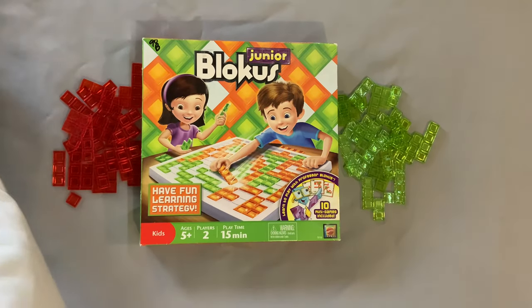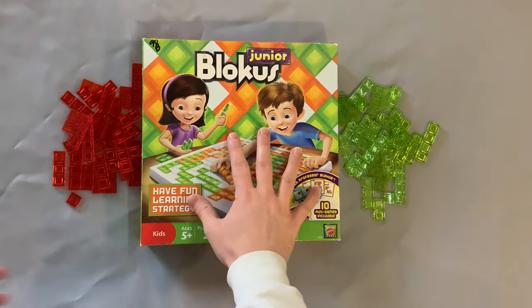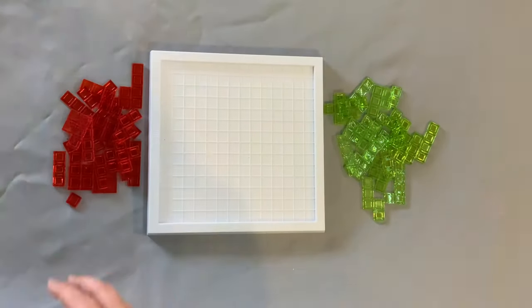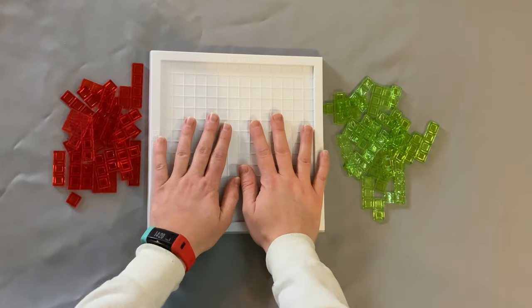Now if your box looks different don't worry because the game plays the same in every single box. First thing you're going to want to do is put the board in the center of the table and split the colors up into two even piles.